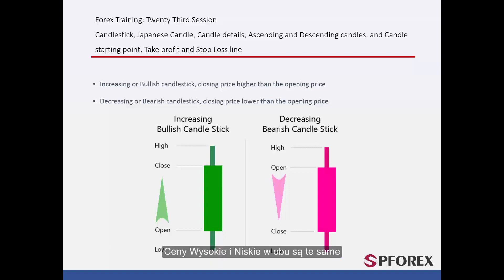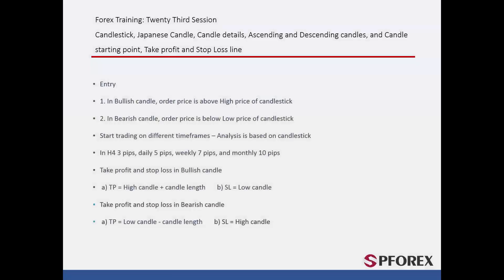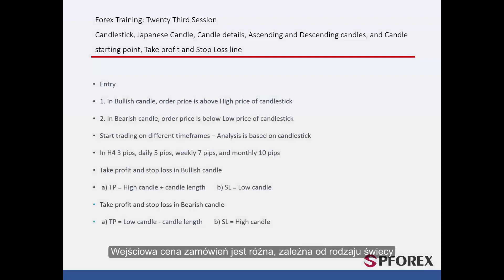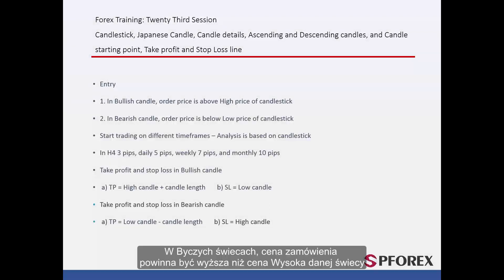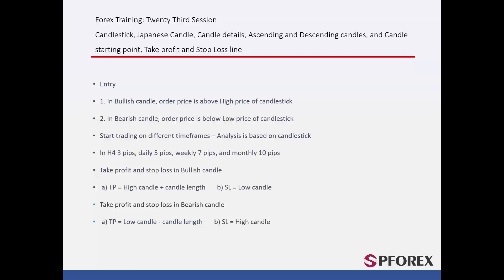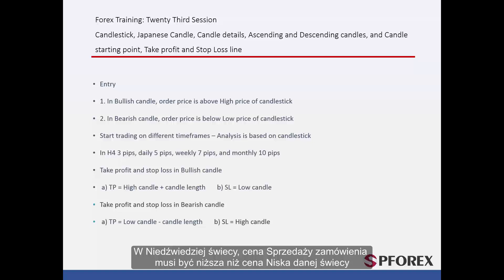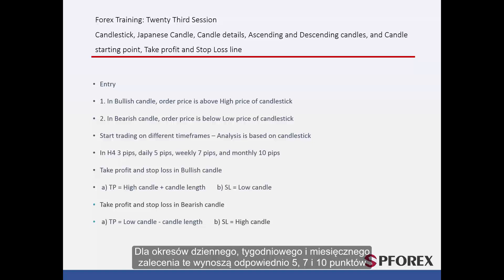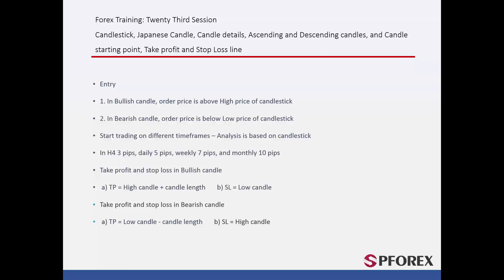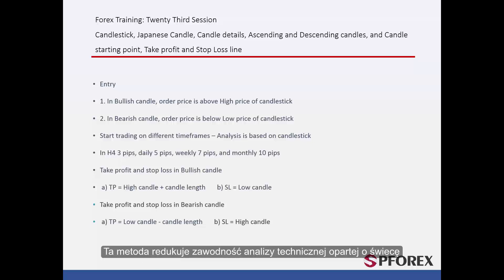High and low prices in either candle type are the same. Order price entry differs based on candlestick type. In a bullish candlestick, the buy order entry price must be over the candlestick's high price. In bearish candlesticks, the sell order price must be lower than the low price of the given candlestick. It is recommended that traders place their initial orders three pips away from candles in the H4 timeframe. This gap for daily, weekly and monthly timeframes would be 5, 7 and 10 pips respectively. This method reduces the failure of technical analysis based on a candlestick.